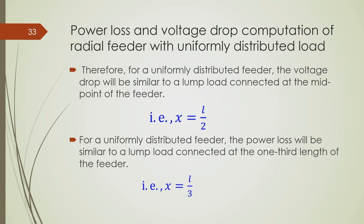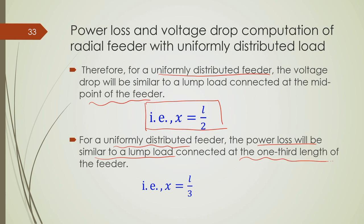Alternatively: for a uniformly distributed feeder, the voltage drop is equivalent to the lumped load connected at the midpoint of the feeder. For a uniformly distributed feeder, the power loss is equivalent to the lumped load connected at one-third of the feeder length. This is something new for this type of analysis.